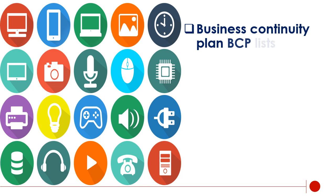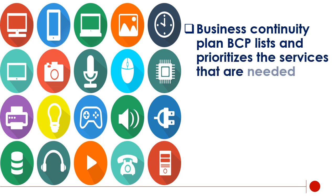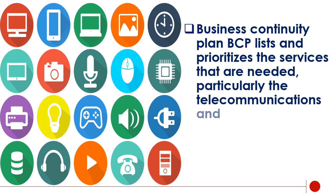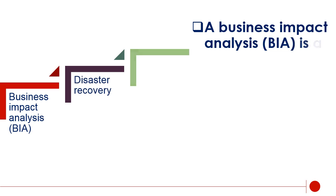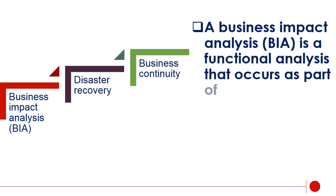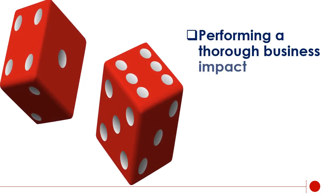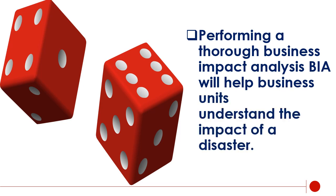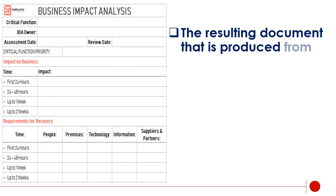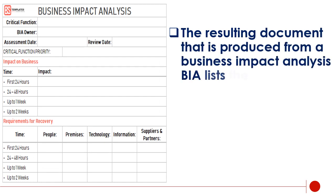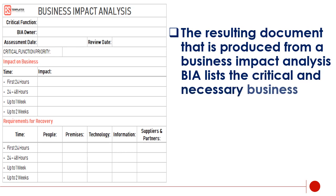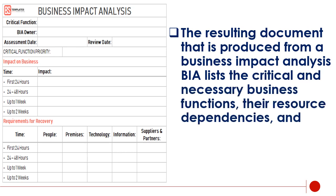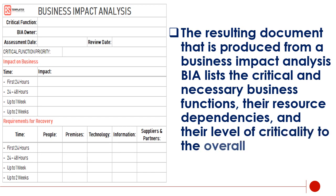The business continuity plan, BCP, lists and prioritizes the services that are needed, particularly the telecommunications and IT functions. A business impact analysis, BIA, is a functional analysis that occurs as part of business continuity and disaster recovery. Performing a thorough BIA will help business units understand the impact of a disaster. The resulting document lists the critical and necessary business functions, their resource dependencies, and their level of criticality to the overall organization.